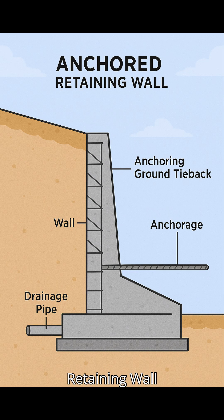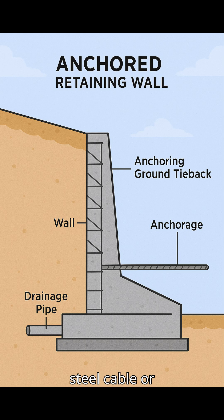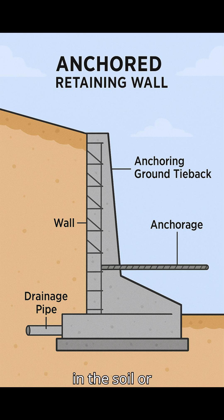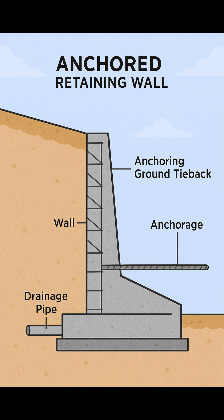Anchored retaining wall. Wall — the vertical structure that holds back the soil. Anchoring ground tieback — a strong steel cable or rod inserted into the soil or rock behind the wall. Anchorage — the point where the tieback is anchored, often using grout to form a secure hold in the soil or rock. Drainage pipe prevents hydrostatic pressure build-up by letting water escape from behind the wall.